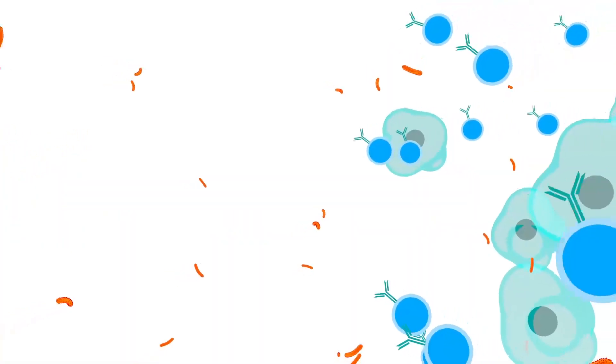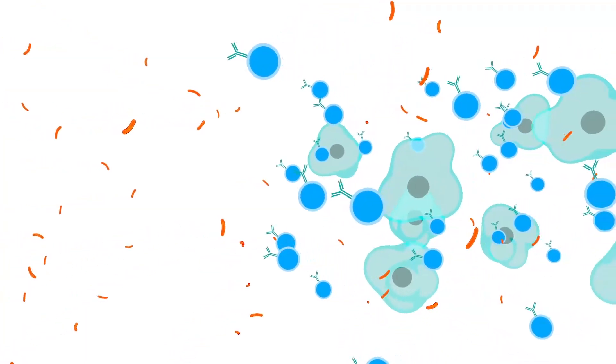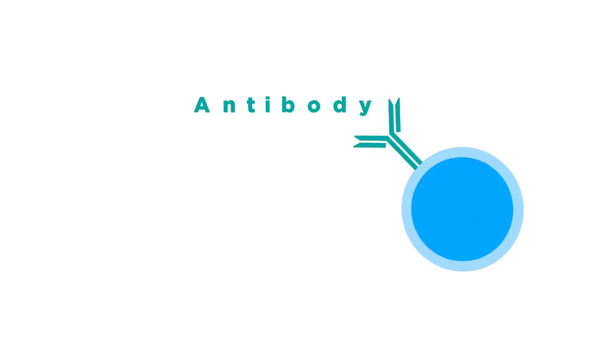They trigger a complex chain of events, involving many different types of white blood cells working together. One type of white blood cell is able to make antibodies to fight the invaders.